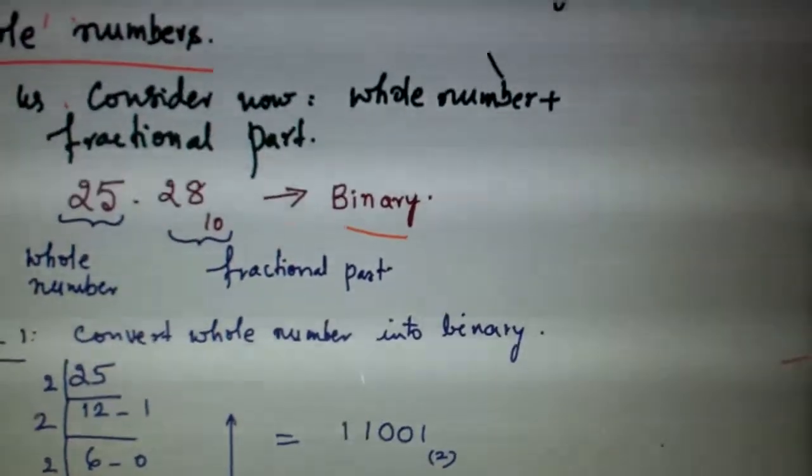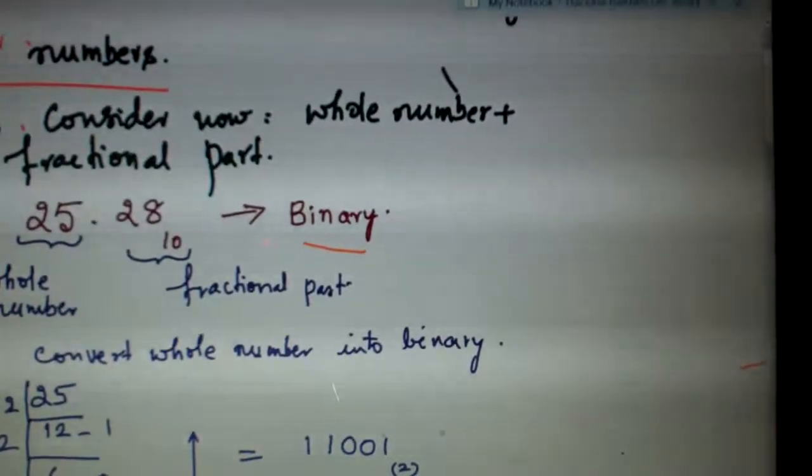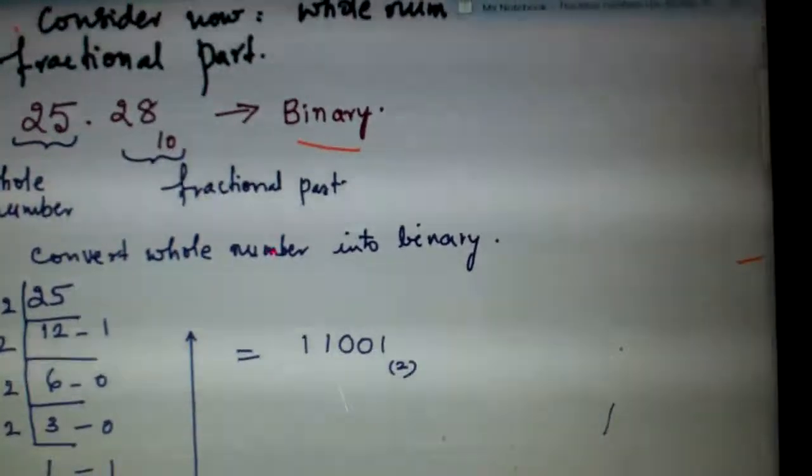The whole number is 25. So by the same procedure as we have done last time, convert the whole number 25 into its binary.